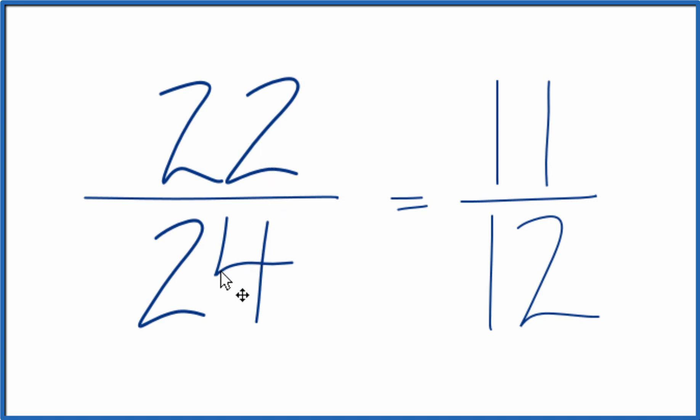So that's it. That's how you simplify 22/24 down to lowest terms. The answer is 11/12. This is Dr. B.